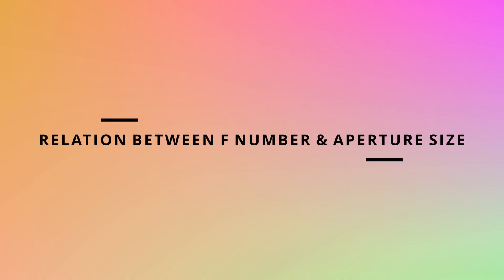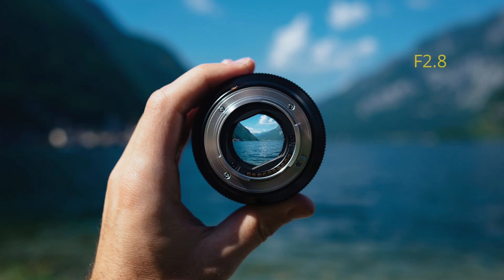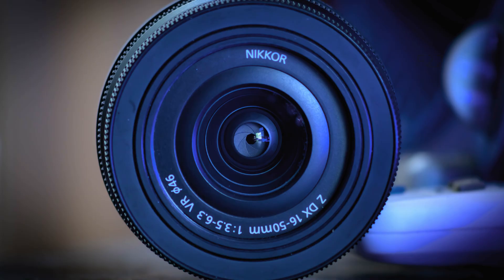There is a relationship between the f-number and the size of the aperture opening. The aperture and the size of the hole are inversely proportional — so a smaller f-number means a larger opening, and a larger f-number like f22 means a smaller opening.